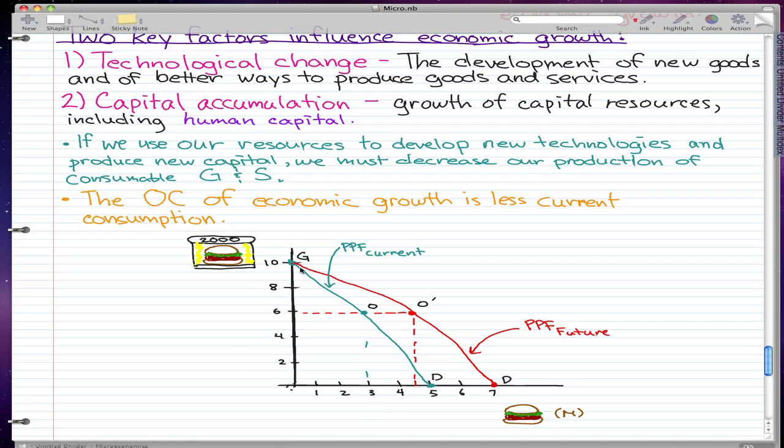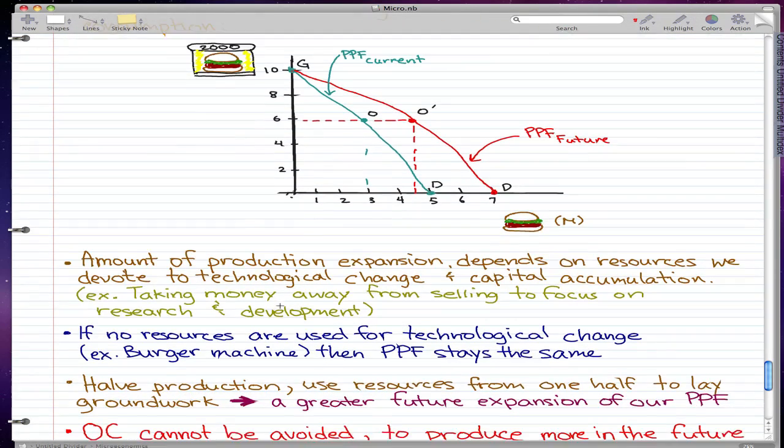If we split up our resources, what will happen is our PPF—that is our current situation—will shift or pivot from this point. It will pivot from 10 and pivot outwards to this red line, this production possibilities frontier—PPF future. This is what we could achieve if we split up our resources to research and develop our Burger Machine 2000 rather than just make burgers full bore.